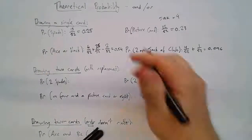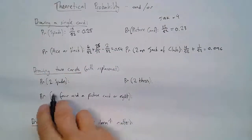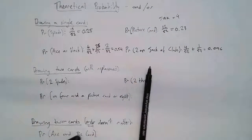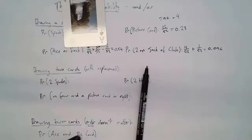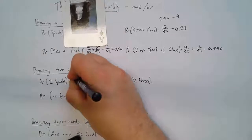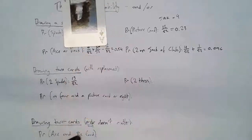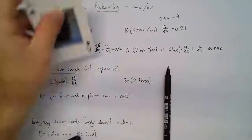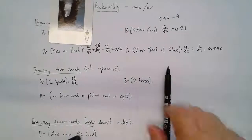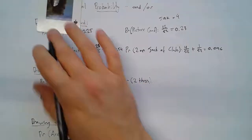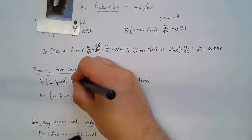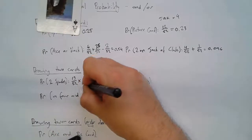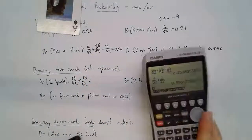Probability of two spades: I draw out a spade — the probability of it being a spade is 13 out of 52. Put it back, and then draw out another spade. That is AND, which is actually times. So it's 13/52 times 13/52.